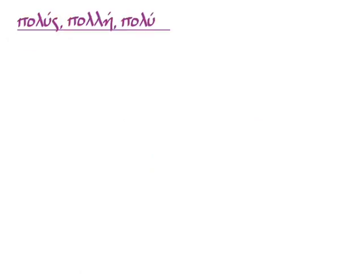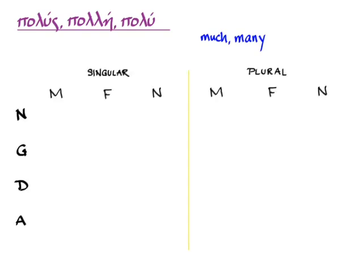Polus, pole, polu is mostly a second and first declension adjective, but it has a couple of third declension forms. It means much in the singular and many in the plural. It's mostly a first and second declension three-ending adjective, but it has a few third declension forms, and that's why you need to learn its paradigm separately. So let's go ahead and do that.